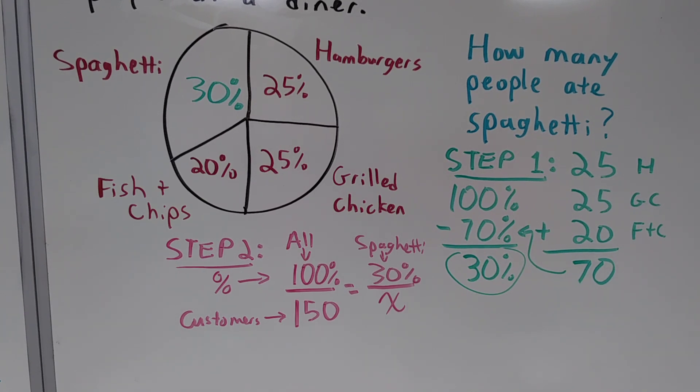When we talk about everyone, we're always talking about 100%. According to the problem, 100% of customers was everyone, and we had a total of 150 customers. 30% of them ate spaghetti, but we don't know exactly how many customers that is, so we'll use a variable x.